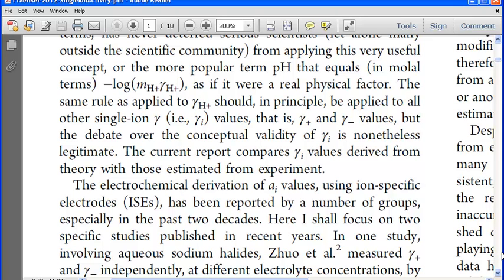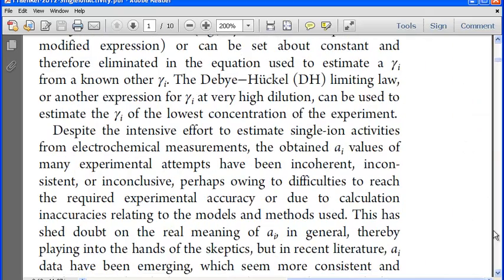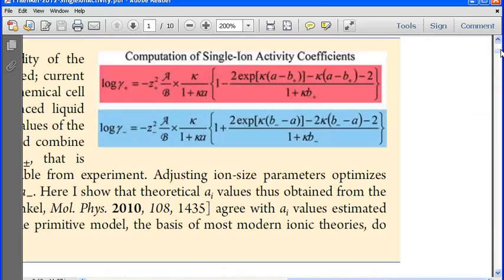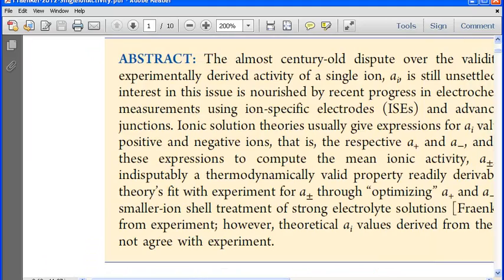Let's actually measure single ion activity coefficients. What people normally do who do this are use what's known as ion specific electrodes. The most common example of that would be a pH meter. A pH meter has an electrode, you put it in the solution and it measures hydrogen ion concentration. It measures the pH or hydrogen ion activity.